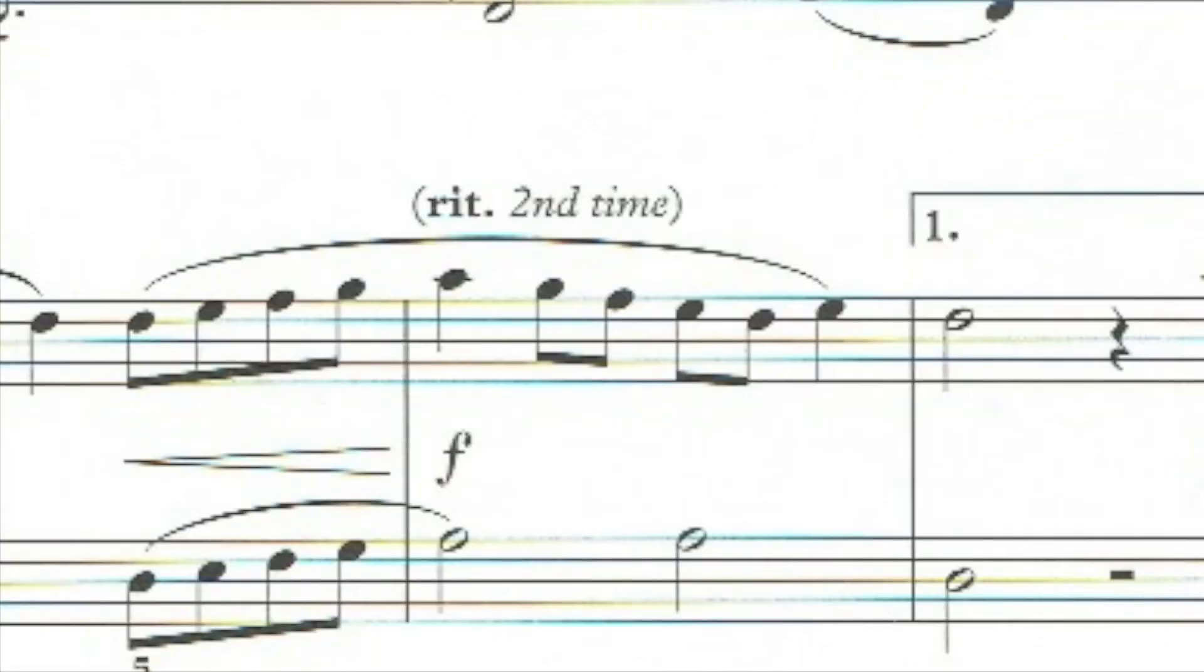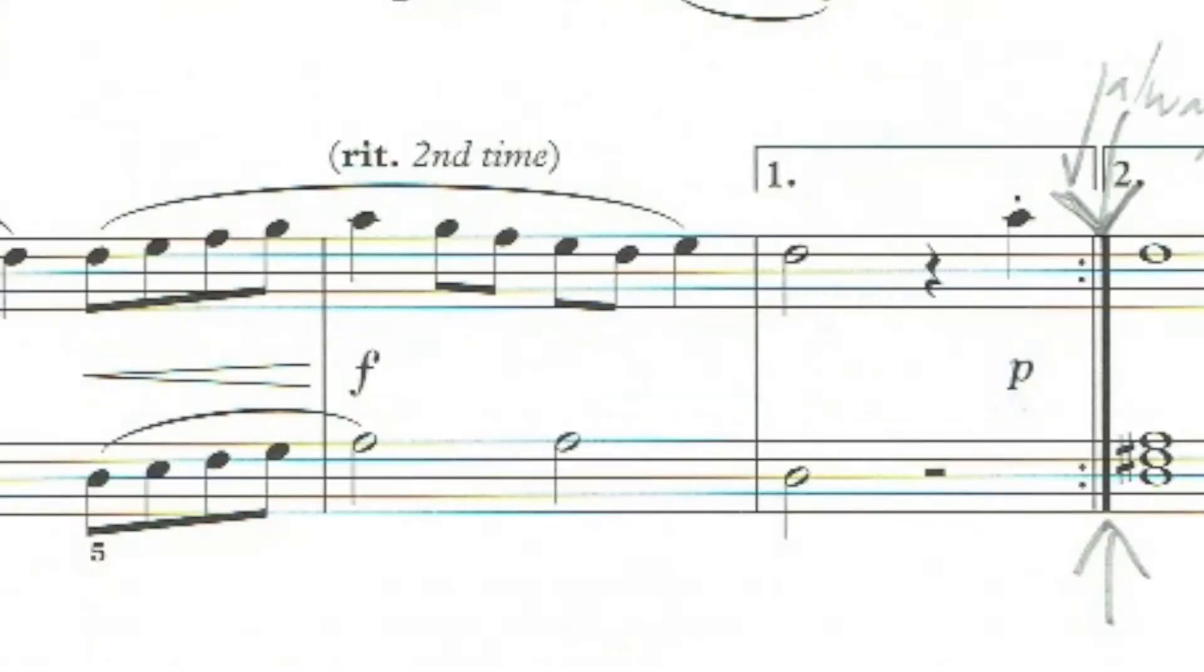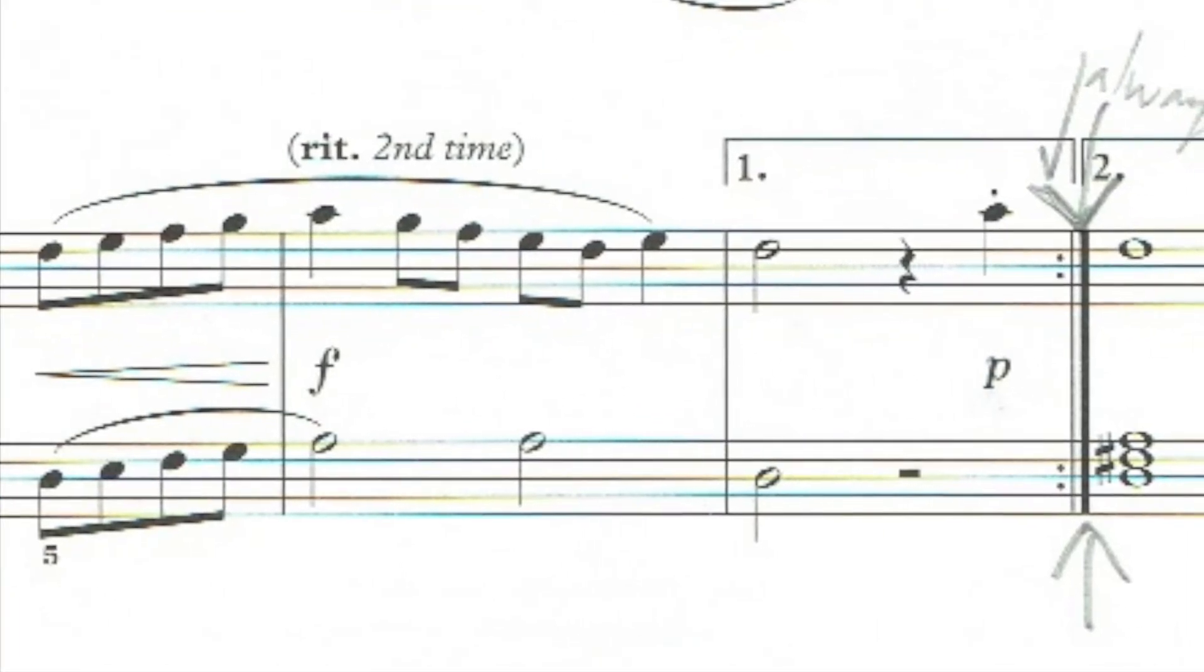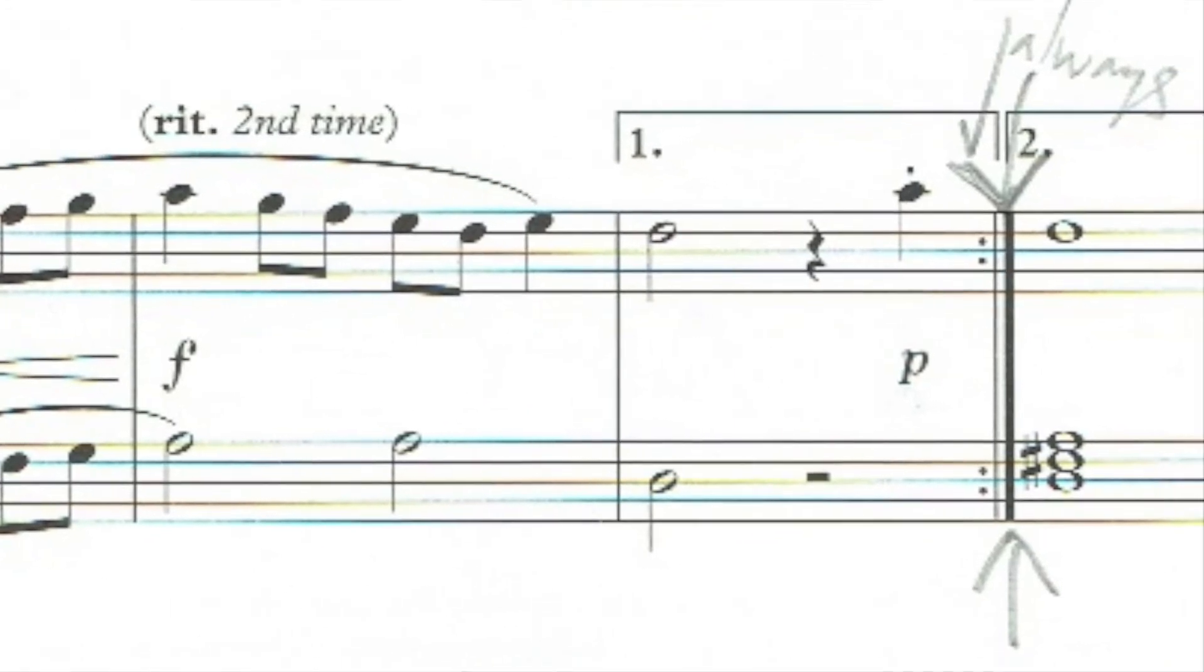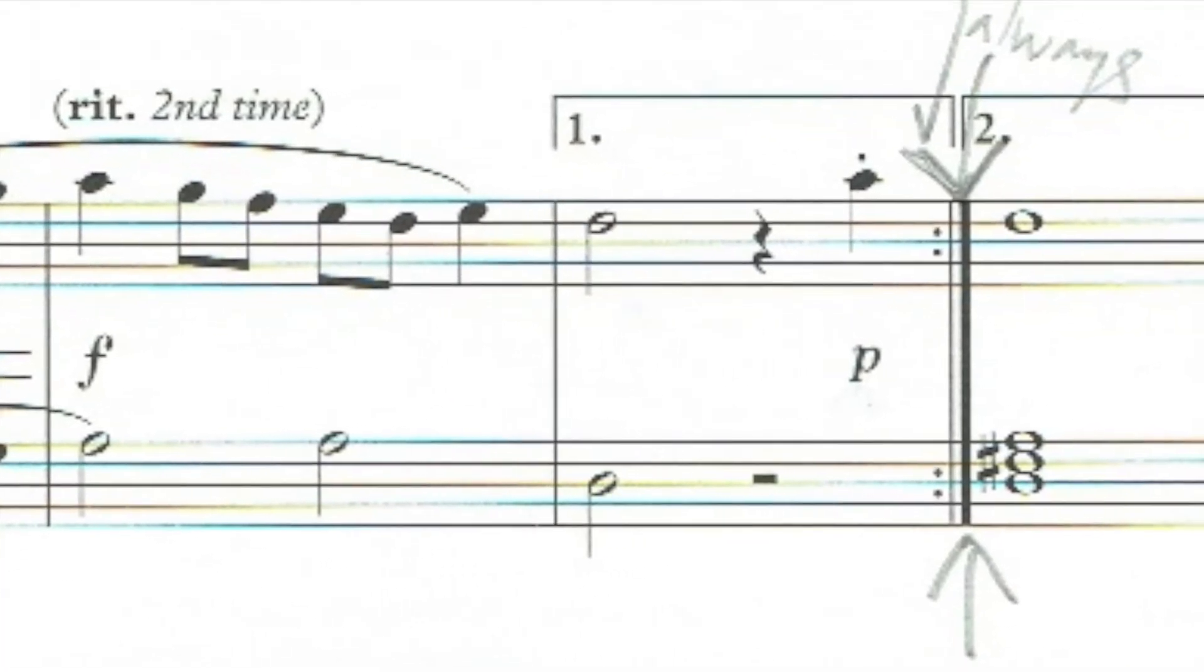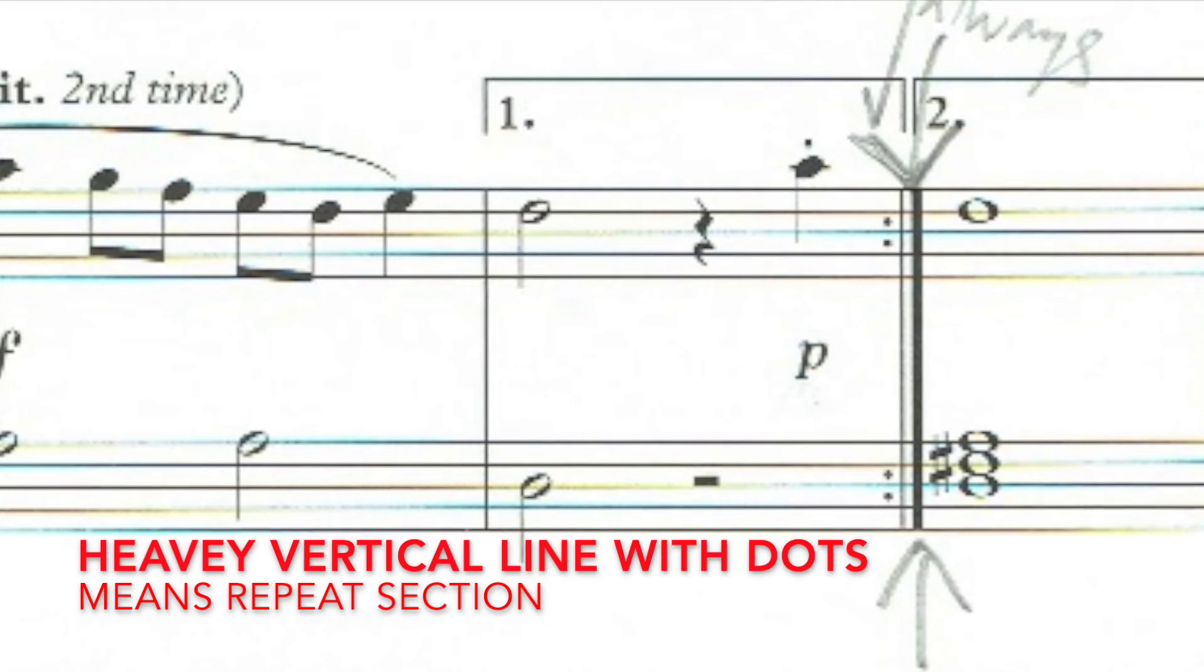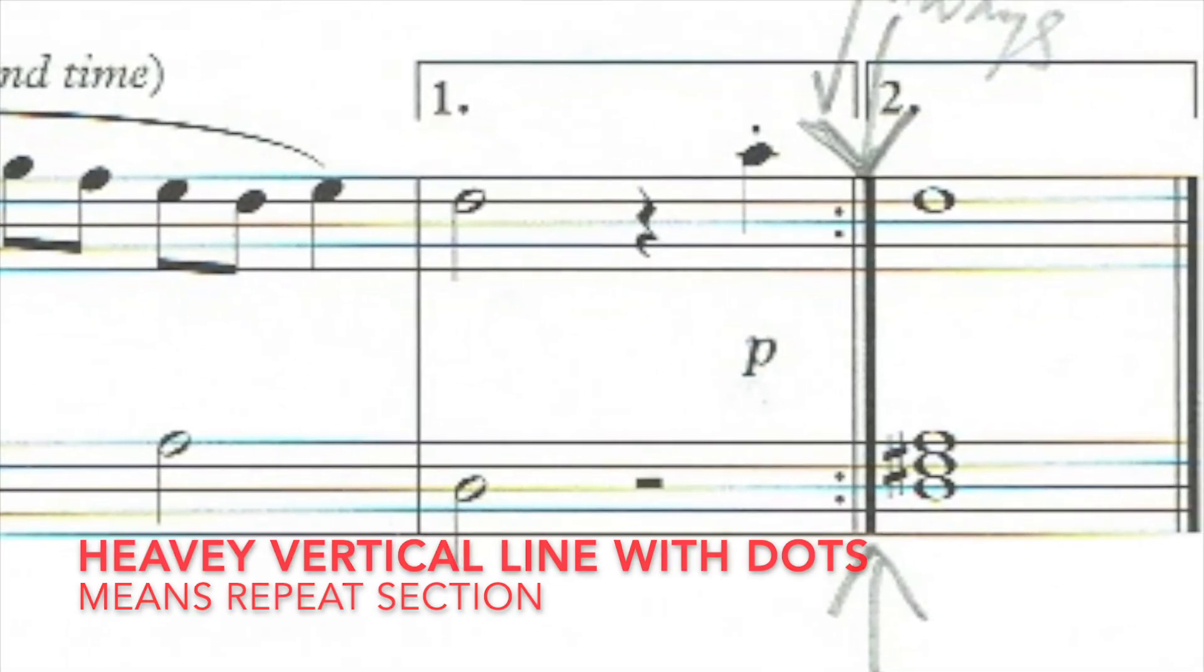Notice that in Parsons Farewell, it says rit second time. In other words, you don't slow up the first time you come to this part of the piece of music. When you observe the repeat and when you come to this bar marked rit second time, that's when you would do the slowing up, which is the final ending of the piece.